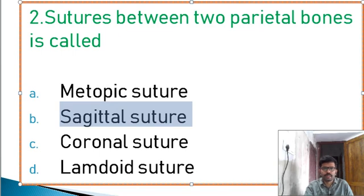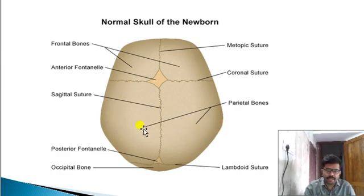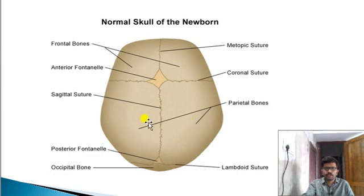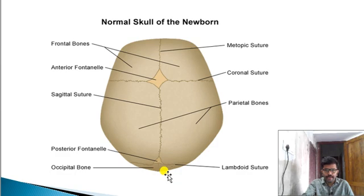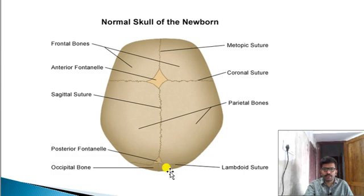Sagittal suture — the sagittal suture is the suture between the two parietal bones. This is the two parietal bones — this is the suture between the two parietal bones in the skull. We have the two parietal bones.